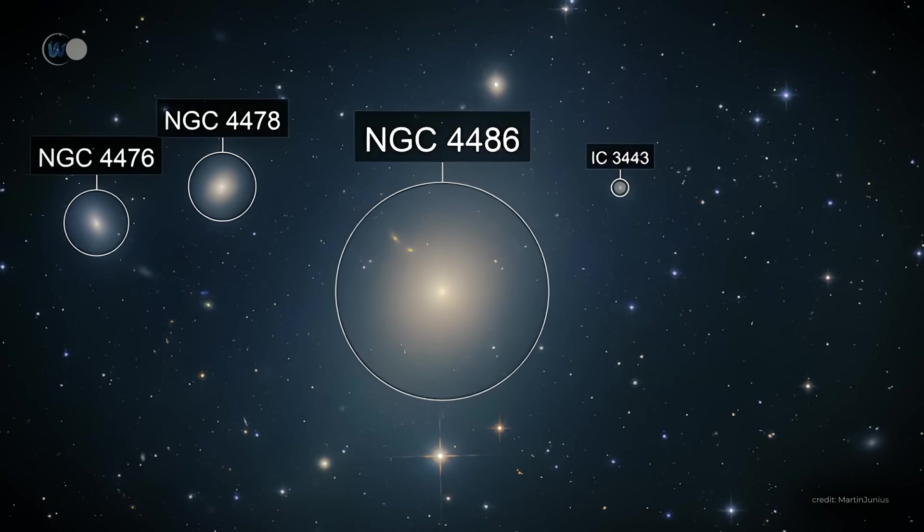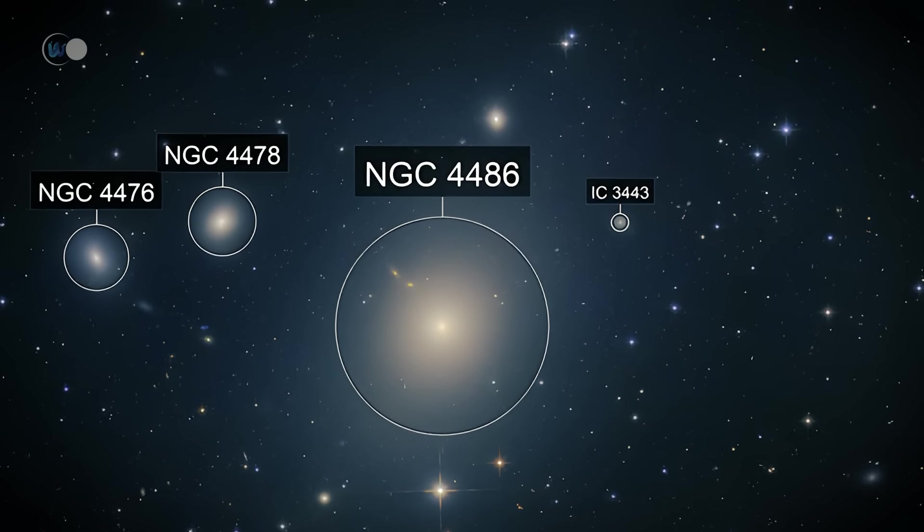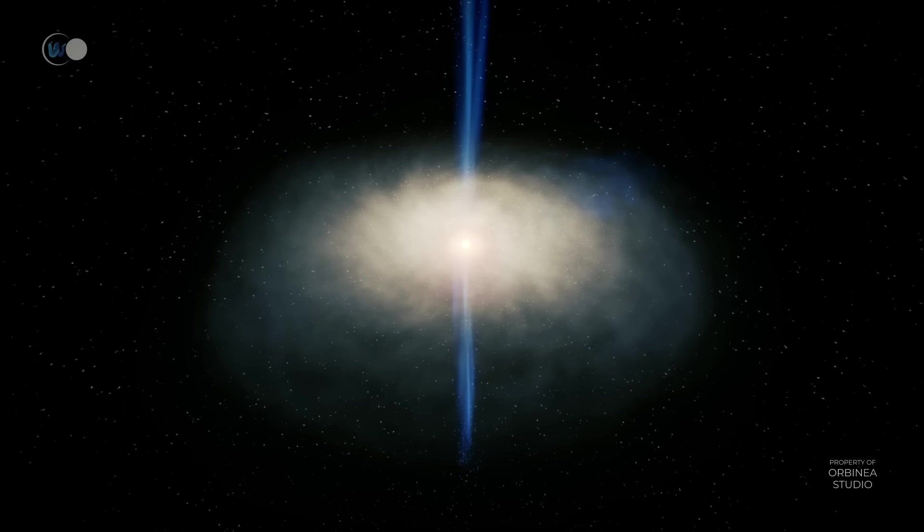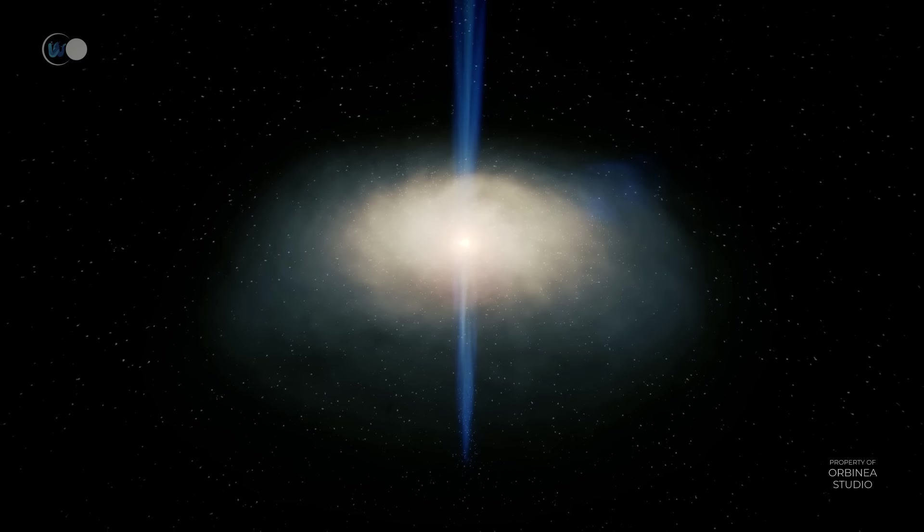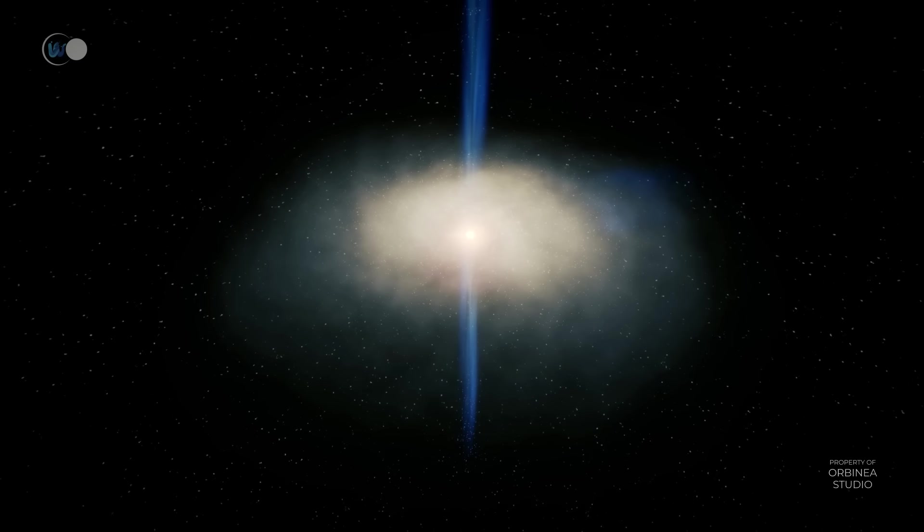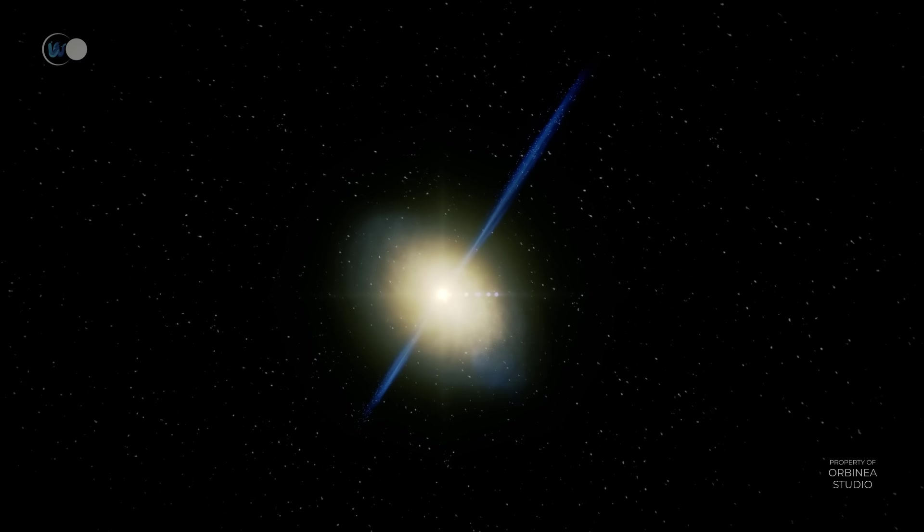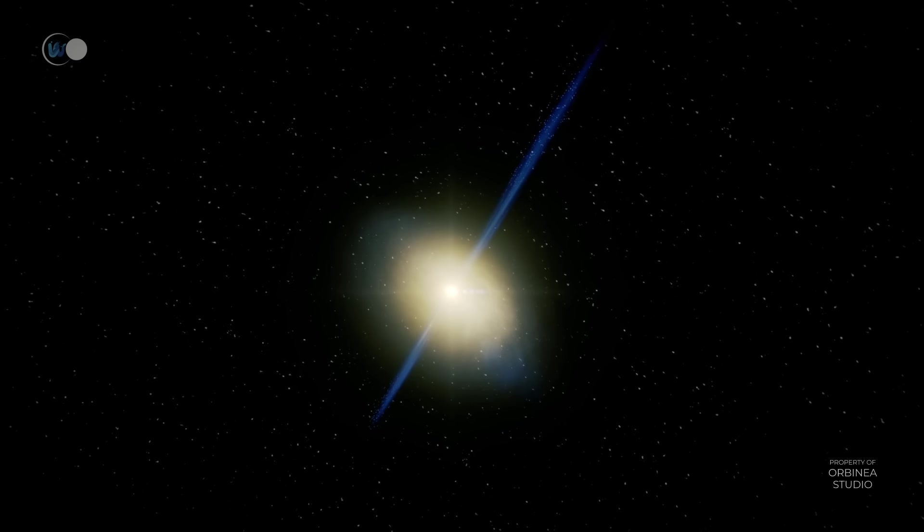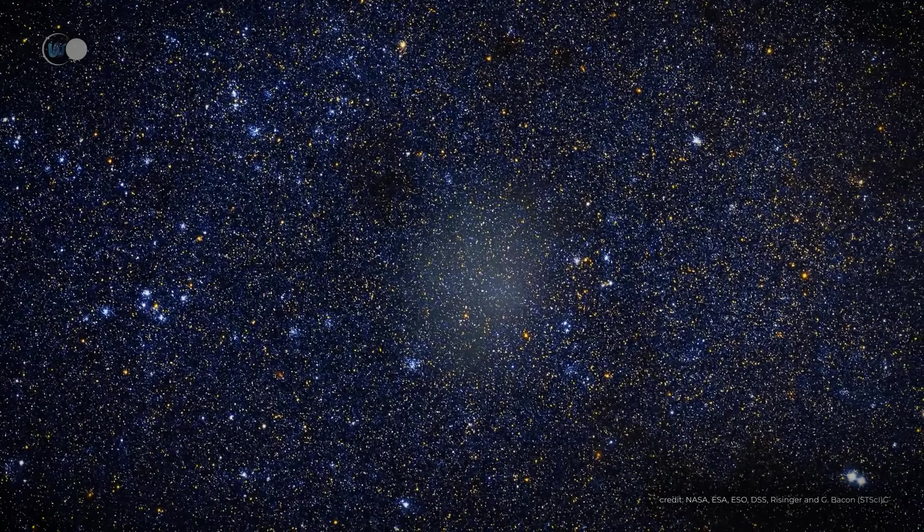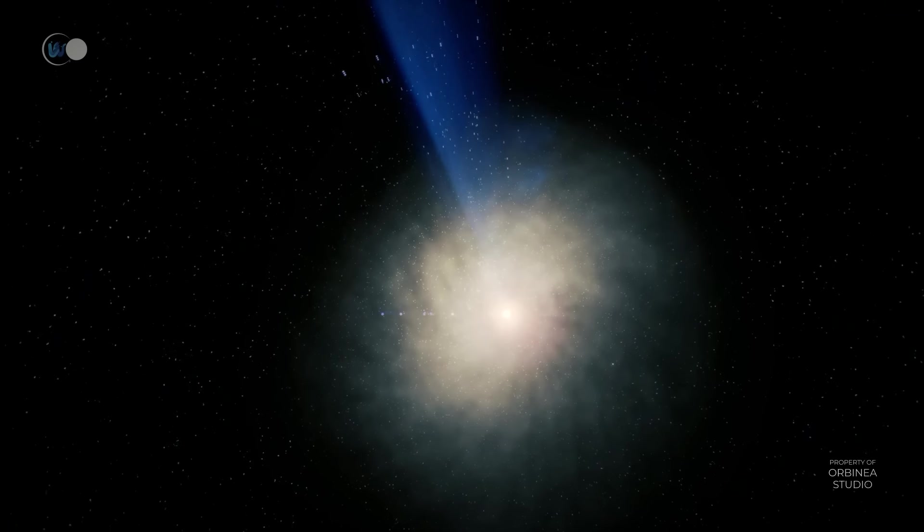Messier 87 is also known as NGC 4486. It is an elliptical supergiant galaxy. Some 50.2 million light-years away, it remains the largest and most luminous galaxy in the Virgo Cluster. M87 was discovered by German astronomer Johann Gottfried Kohler in 1779. Charles Messier rediscovered it and included it in his catalog, published in 1781, in which M87 is listed as the 87th object.